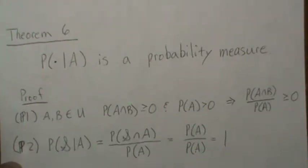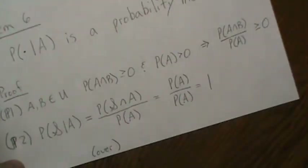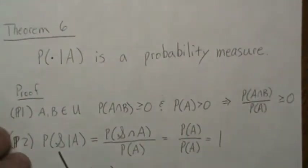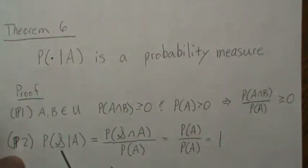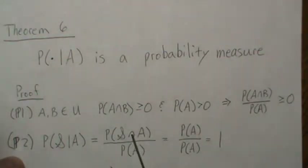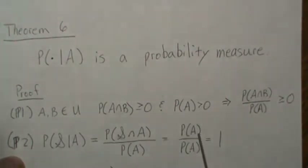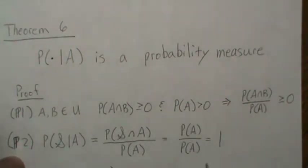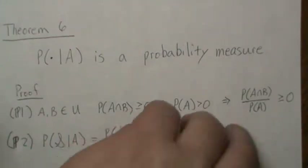Condition two: the probability of the sample space given A has to be one. By definition this is the probability of A intersect S divided by the probability of A. That intersection is just A, so this equals one. It satisfies condition two.